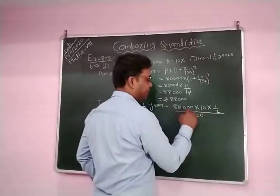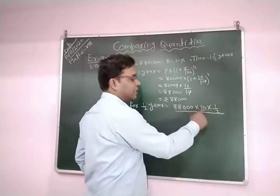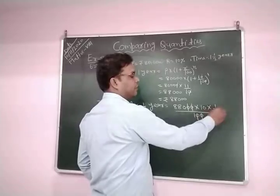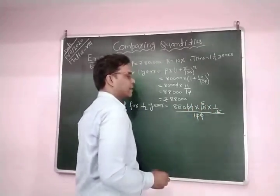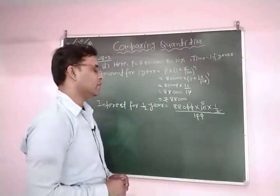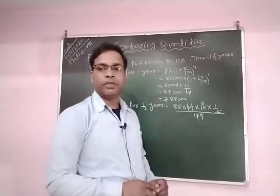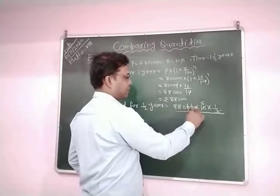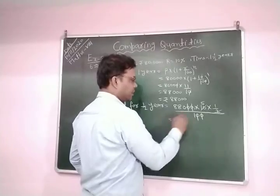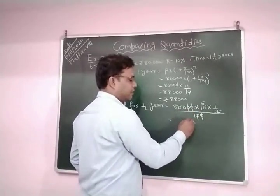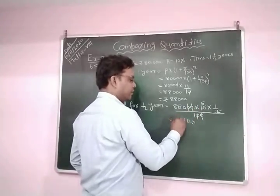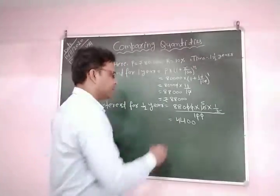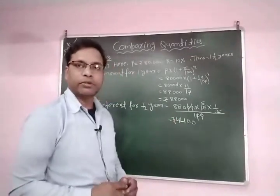So we write 88,000 into R which is 10%, time 1 by 2 years, because we find interest for half year. Simple Interest equals principal into rate into time by 100. This principal is the amount treated as principal for half year, divided by 100. When you cancel and multiply, you obtain Rs.4,400.